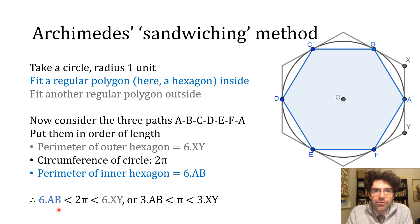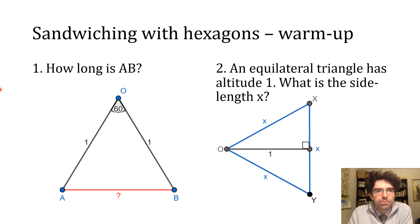6AB is the perimeter of the inner hexagon and that is less than the circumference of the circle, which is 2π times the radius that we said was 1, and that is less than 6 times the side length of the outer hexagon. So we're going to need to find out what AB and XY actually are to understand what this amounts to, and before we do that I want you to do a couple of warm-up problems which should get you into the right frame of mind. So if you just pause the video and have a think about these two problems, and then when you've done so you can carry on.